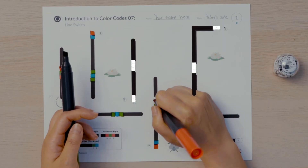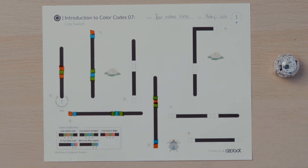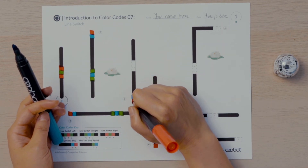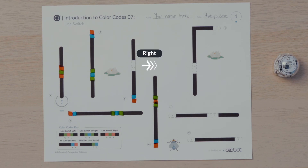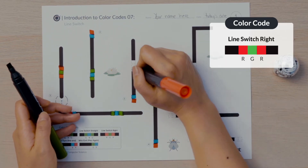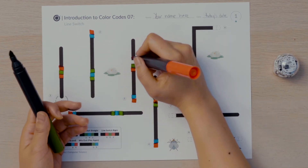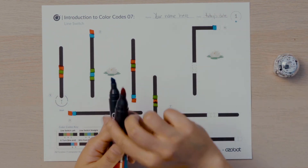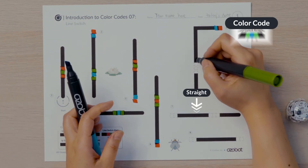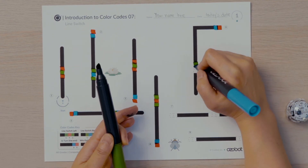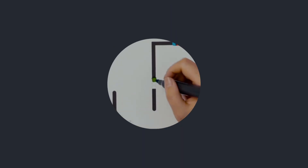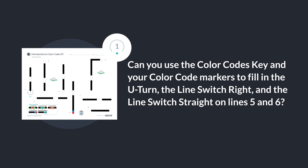Let's complete lines five and six. Both lines need a U-turn on the ends. I will follow each line to make the first square Ozobot will come to blue and the second square red. Once Ozobot begins to travel up line five, it will need to turn right to get to line six. I will put the color sequence red, green, red into the empty boxes to program Ozobot to turn right and continue moving until it sees line six. After Ozobot begins to travel down line six, I will put the color sequence green, blue, green into the empty boxes to program Ozobot to go straight and continue moving until it senses line seven. Can you use the color codes key and your color code markers to fill in the U-turn, the line switch right, and the line switch straight on lines five and six?